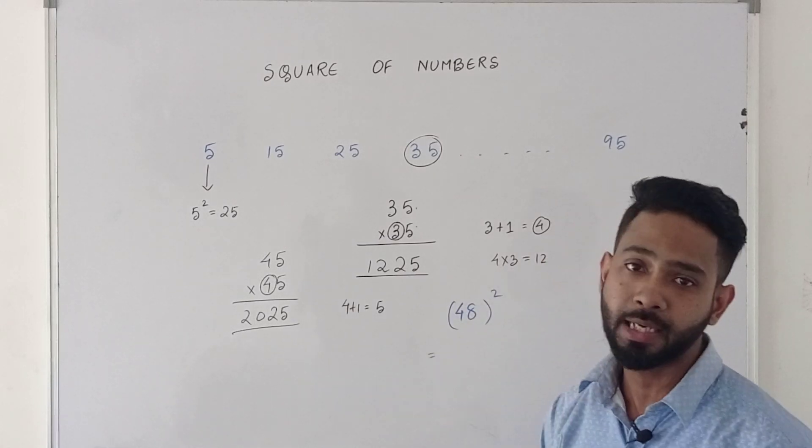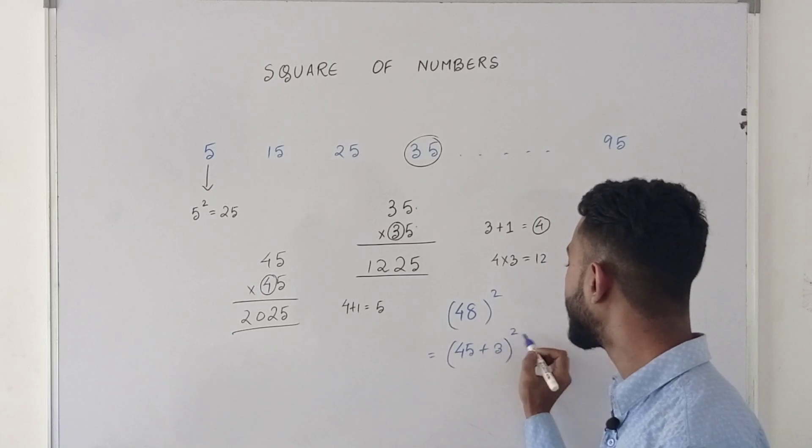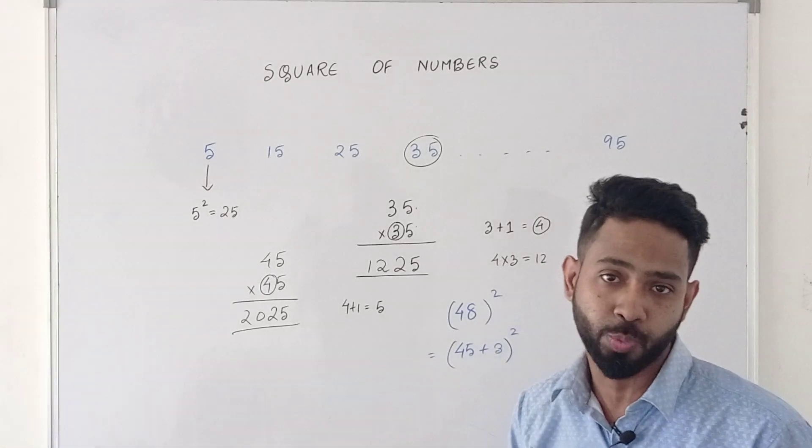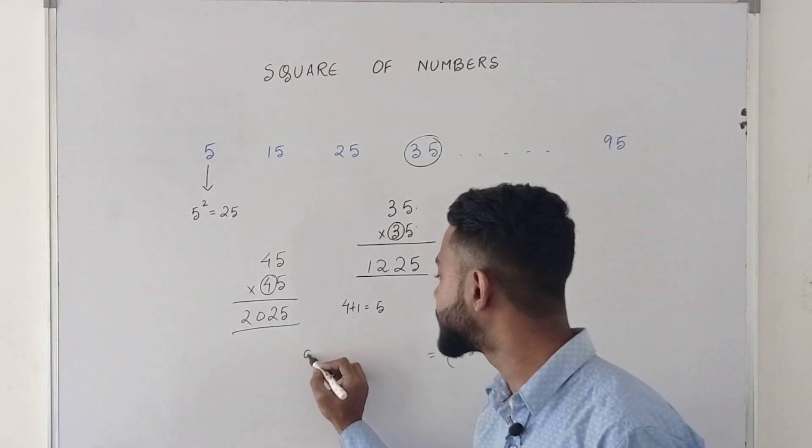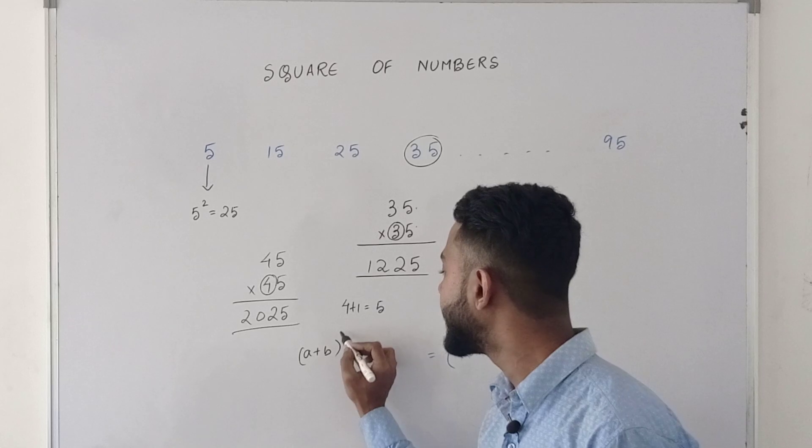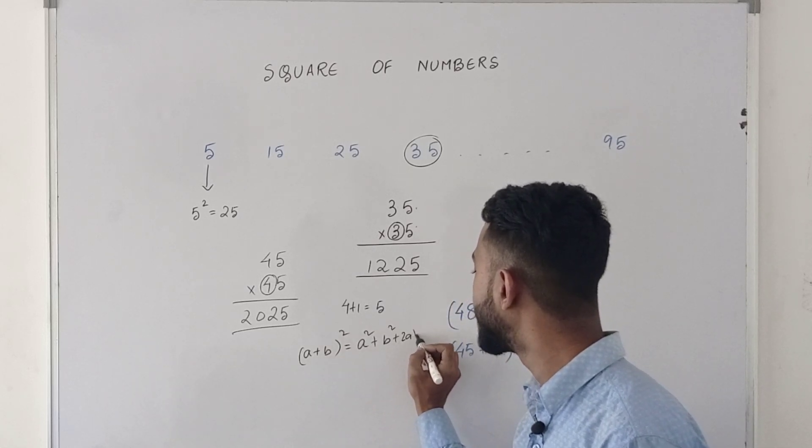If I have to find 48 square, I can write 48 as 45 plus 3 whole square. Now if you know the formula of a plus b whole square, applying that formula it becomes easy. a plus b whole square can be written as a square plus b square plus twice a b.